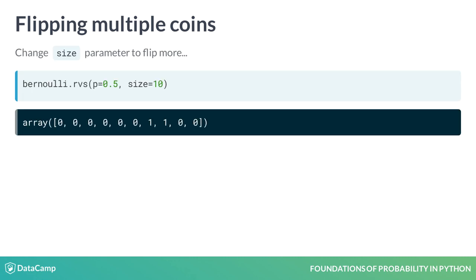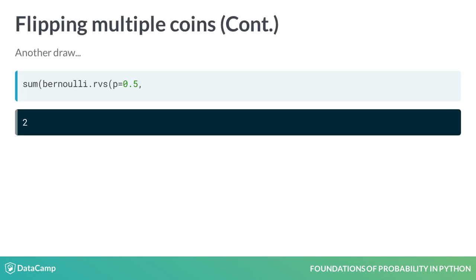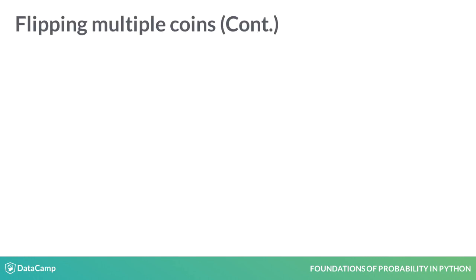We can use sum to know how many heads we got. The first time we got 5 heads and 5 tails. After another draw, we got 2 heads and 8 tails, so we can appreciate the randomness. A sequence of independent Bernoulli trials follows the binomial distribution. Instead of using the Bernoulli object and adding the outcomes, we can use the binomial distribution and the binom object.